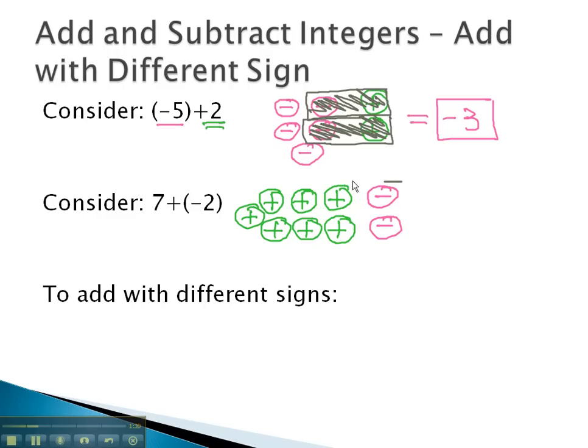And again, we see these groupings of positives and negatives which we'll subtract out to zero. In this case, what we see we're left with are five positives or positive five.